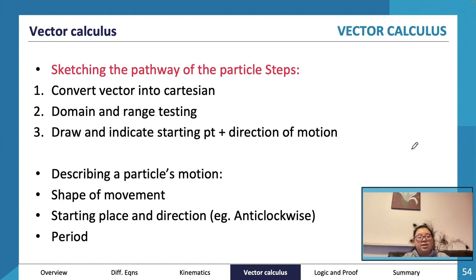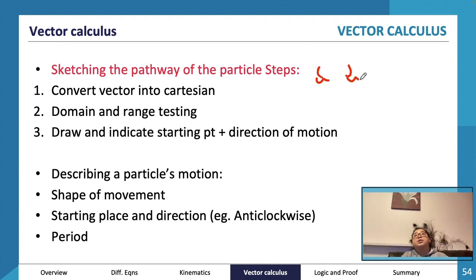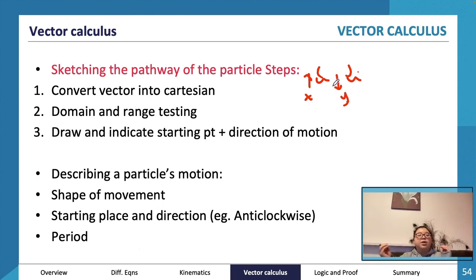There are a couple of things they can ask us to do: all the kinematics motion stuff, and also sketching pathways. To convert a vector equation into a Cartesian equation - which is normally done when it only has i and j components since we don't work with 3D much - you make the i-component equivalent to x and the j-component equivalent to y, then work with the parametric equations to get y in terms of x.